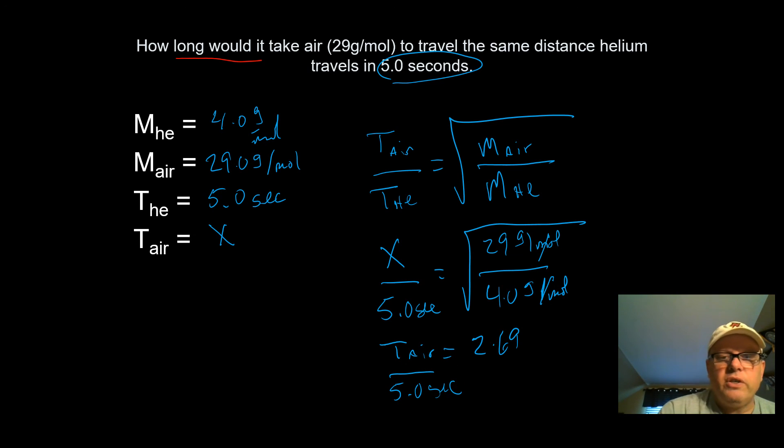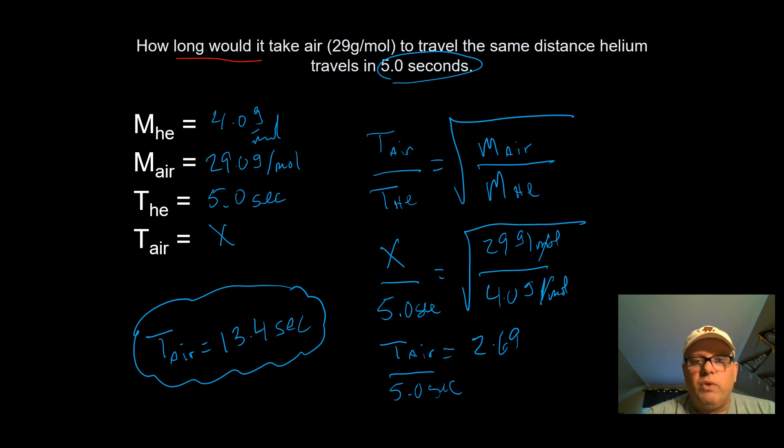So then I'll finish that out. And I end up with a time of air equal to 13.4 seconds. So what that means is that the distance that helium travels in 5 seconds, it will take air 13.4 seconds to travel the same distance. Why? Because air is heavier. And that's how Graham's law works.